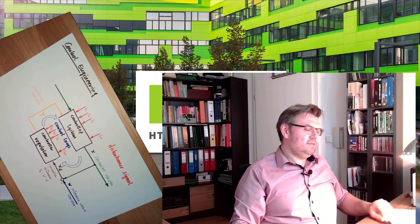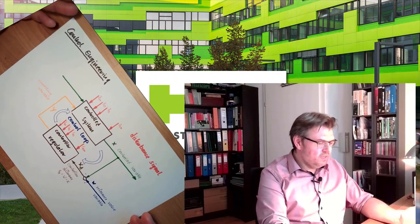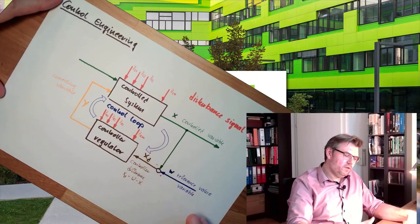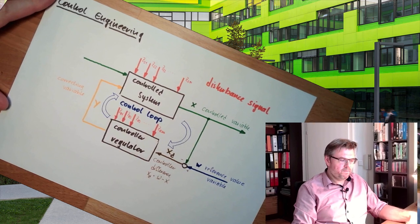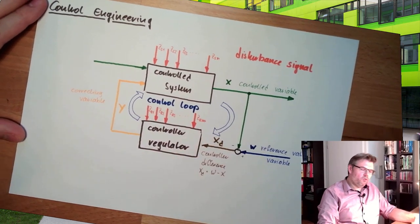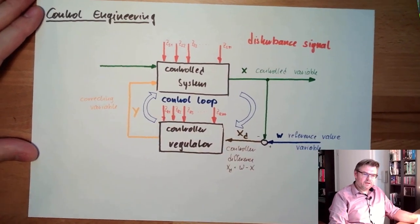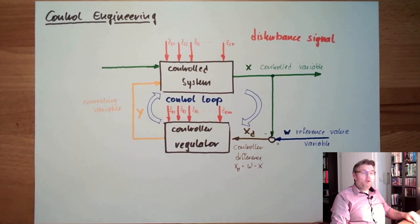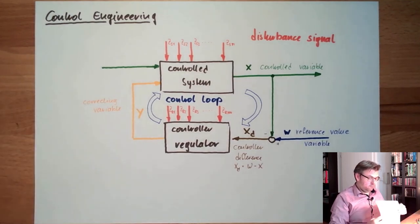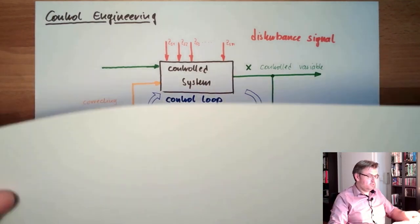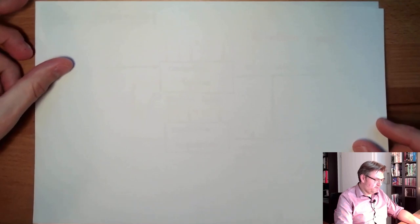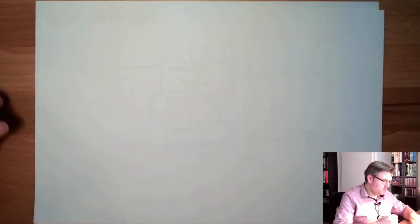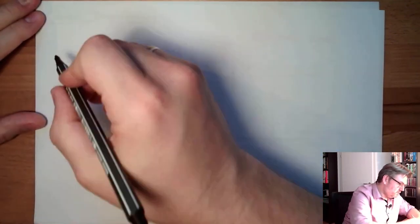This was our picture of control engineering, this was the control loop and so on. So we are talking about this controller here, this regulator. One possible way of distinguishing between different types of controllers is because of the controller construction.